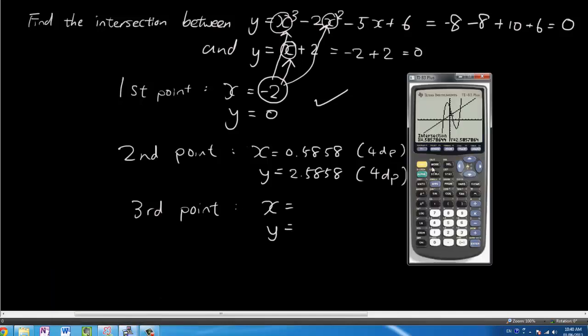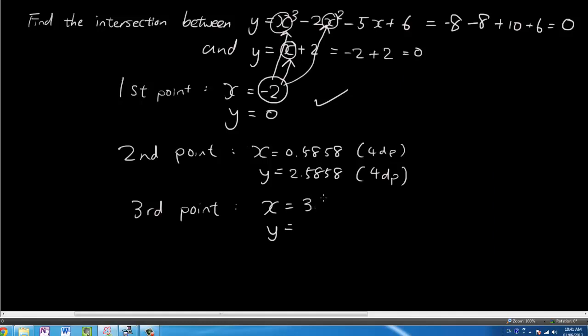And the third one again, I'm going to go to ship calc 5. Go to the third point of intersection. Enter three times. And the exact point is 3.4142 and 5.4142. And they're both rounded to 4dp.